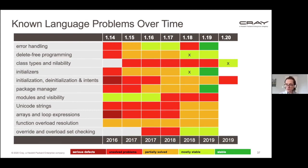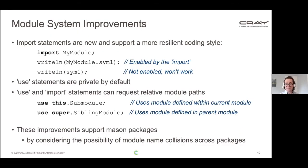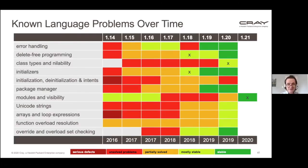The way we addressed those problems was with new features in 1.21 for split initialization and copy initialization. Another thing we did in 1.21 was address module visibility issues — we made modules much tighter, and Lydia's going to talk about these. To summarize: we added import statements, made use statements private by default, and allowed use and import statements to request relative module paths. These improvements help solve the original Mason package problem because programs can now differentiate between using a submodule and a top-level module, so submodule names can be the same across different packages.